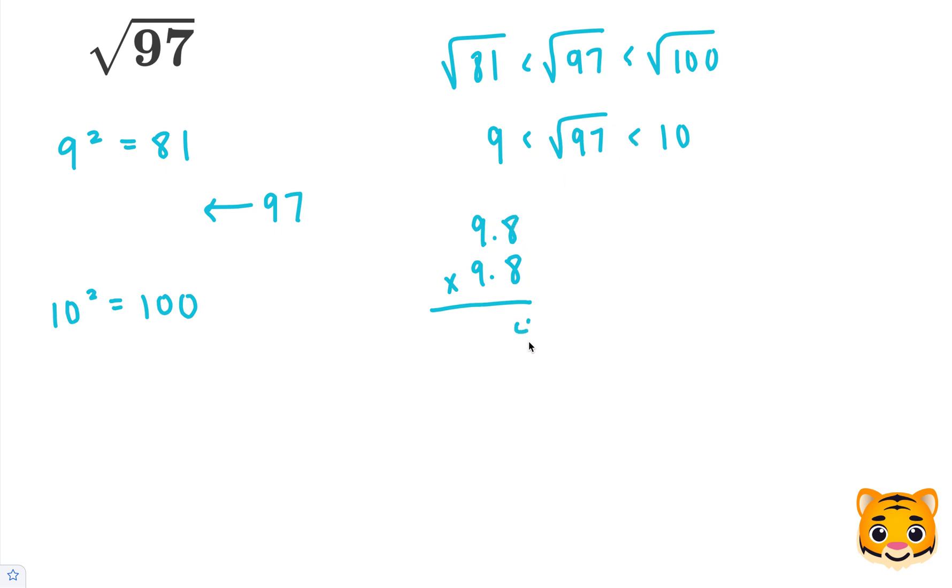8 times 8 is 64, carry the 6. 9 times 8 is 72, plus 6 is 78, add our 0. 9 times 8 is 72, carry the 7. And then 9 times 9 is 81, plus 7 is 88.